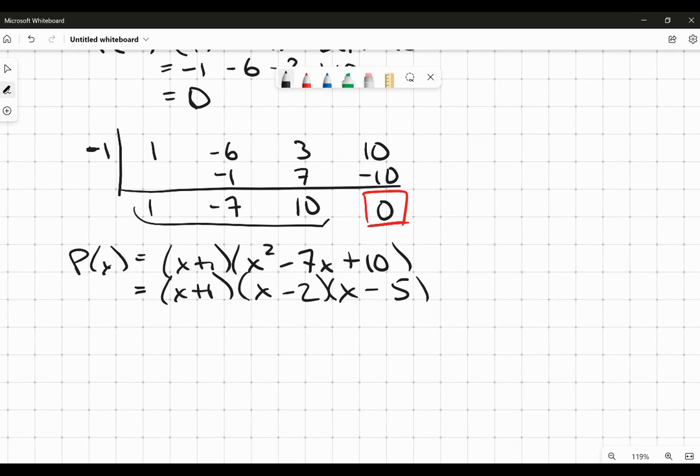So there we go. I was able to factor it and now I'm going to let that equal 0 because that's what the original function was equal to or the original polynomial is equal to. So I know, therefore, that either x plus 1 is equal to 0, x minus 2 is equal to 0, or x minus 5 is equal to 0,